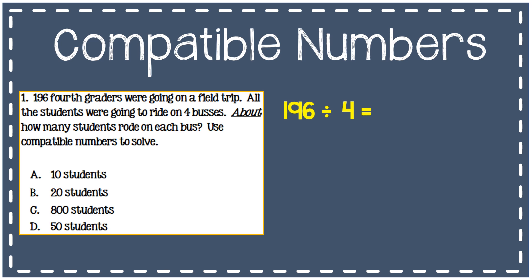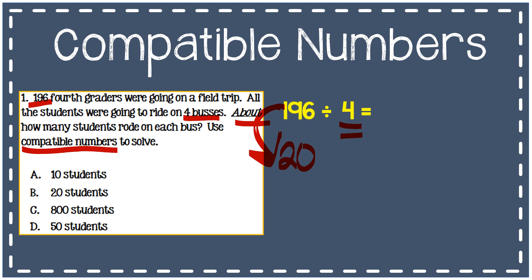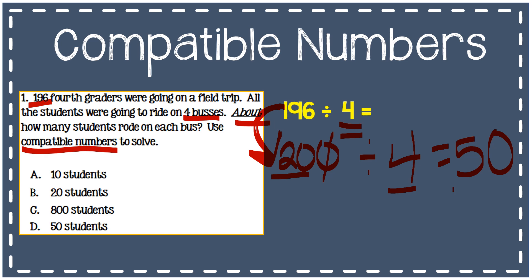Let's look at another division example. 196 fourth graders were going on a field trip. All the students were going to ride on 4 buses — about how many students rode on each bus? Use compatible numbers to solve. I'm going to find an estimated answer. What can I change 196 to that is close, reasonable, and divisible by 4? I know 20 is a multiple of 4, so I can round 196 to 200. So 200 divided by 4 — using mental math, 20 divided by 4 is 5, and with the zero at the end the answer is 50. About 50 students will ride on each bus.